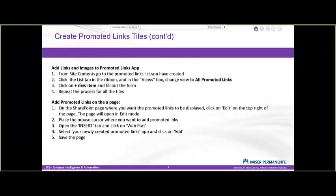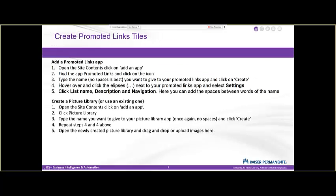So let's go back and look at the steps. The first thing is we're going to open site content, find the promoted links app, give it a name, hover over the ellipses and fix the name. We're going to use no spaces in the name — and I'll explain why, this is one of those best practices things. We'll hover over the name, change the name, and then give it a display name.